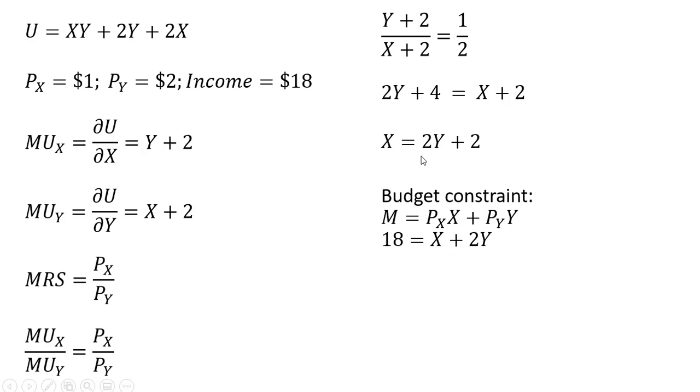Now where we see X, we're going to substitute in 2Y plus 2. And now we're going to simplify this. 2Y plus 2Y is 4Y, and then 18 minus 2 is 16. So the utility maximizing level of good Y is 4 units. The consumer should buy 4 units of good Y.